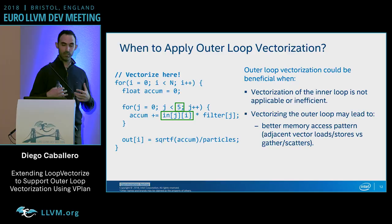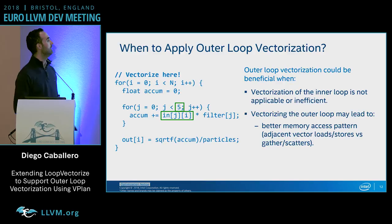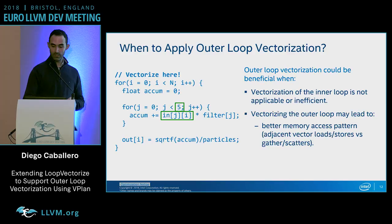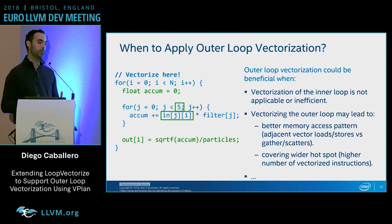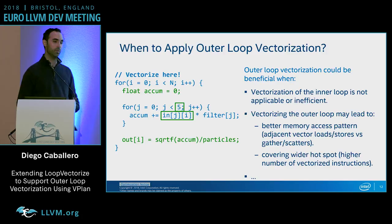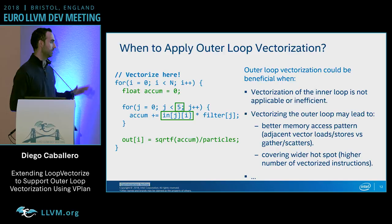In addition, when we vectorize an outer loop we may end up with a better memory access pattern. For this memory access, if we vectorize the inner loop we would generate a vector gather — a very expensive memory operation. However, if we vectorize the outer loop we generate an adjacent vector load, which is much more efficient. Finally, if we vectorize the outer loop we may cover a wider hotspot, for example also vectorizing a square root function and division — the more instructions we vectorize, the more benefit we can get.